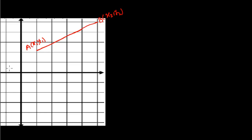Let me derive this. Here is a line with point A having coordinates (x1, y1) and point B with coordinates (x2, y2). There is a point P with coordinates (x, y) that is dividing line AB in the ratio m1:m2. We need to find the formula for the coordinates (x, y). Let me draw perpendiculars from each of these three points.